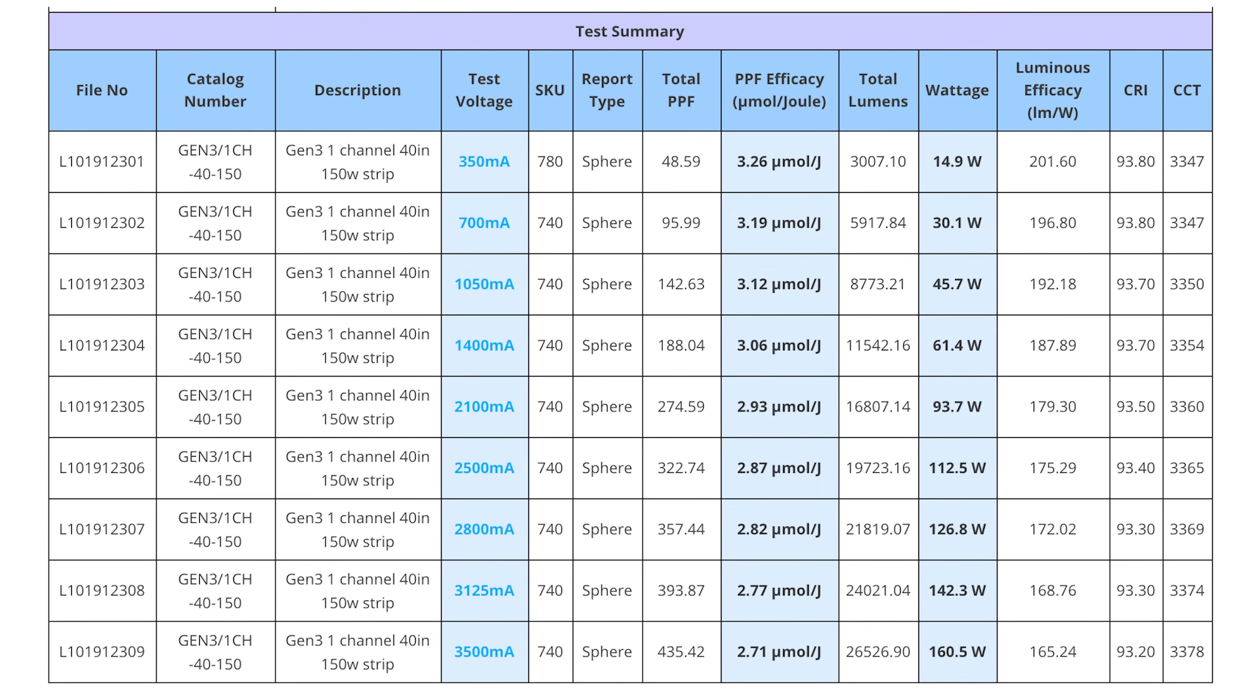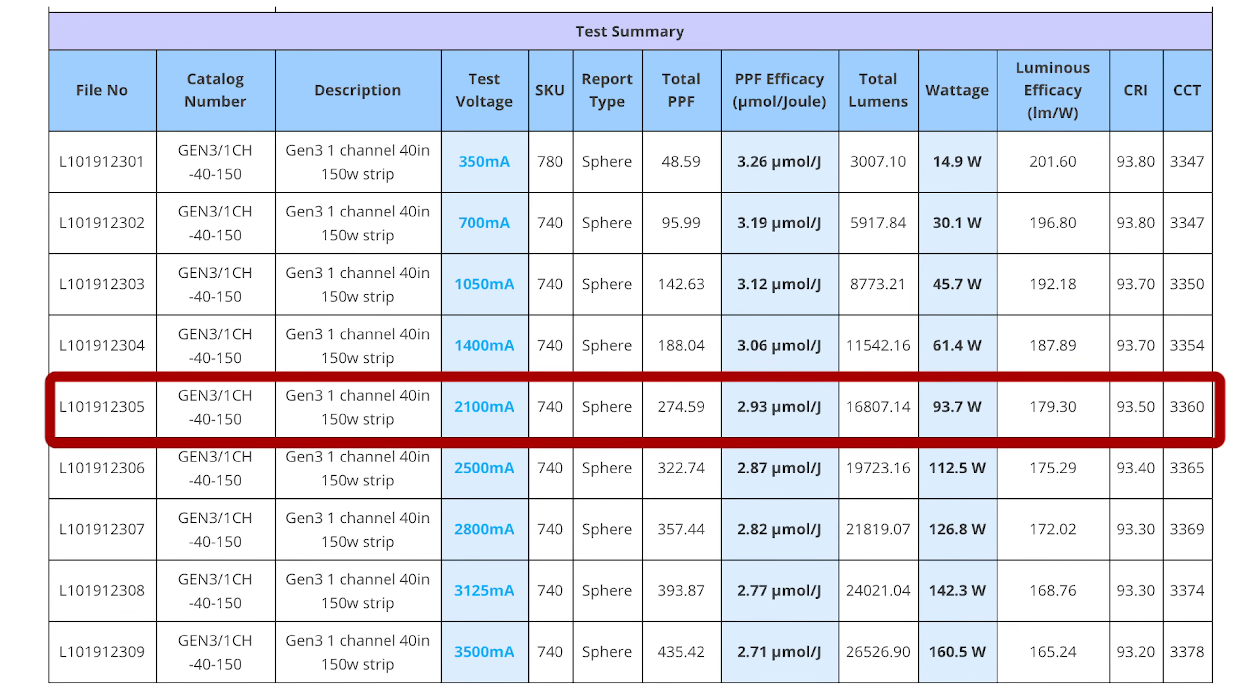Here is a testing report for their bars. They tested the 40 inch LED bar, the same bar that is used in their fixtures, in an integrating sphere at different currents. In the case of the X6 600W fixture, it runs at 2083mA, which is really close to the 2100mA line, so that's the line we want to look at to verify its efficacy.